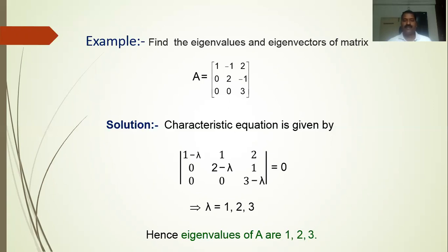So we call these the eigenvalues — the eigenvalues of this matrix A are 1, 2, and 3. They are all distinct. There is no rule that they must always be distinct; there are examples where roots are repeated, one repeated twice, all three repeated, or two are real and one is complex. This whole collection gives the spectrum of that matrix A.